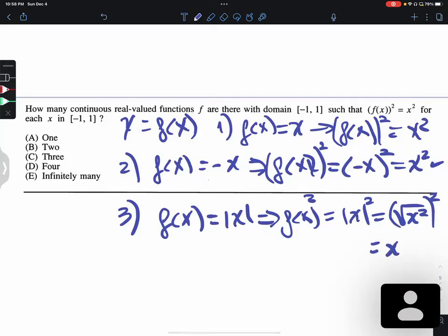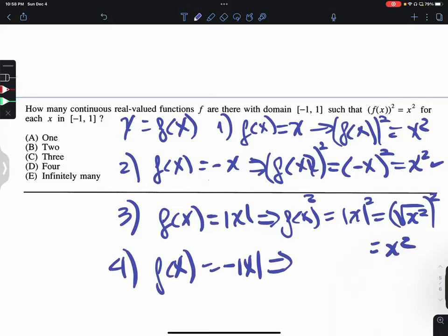The fourth one: if f equals negative absolute value of x, then f of x squared is negative absolute value of x, everything to the second power, which is also x squared.